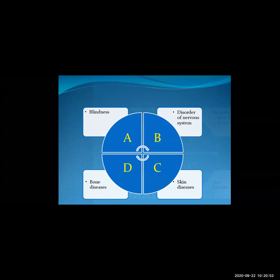Now we see a pie chart showing the result of lack of vitamins. There is a pie chart with sections A, B, C, and D representing the four vitamins. Because of lack of Vitamin A, we have a problem like blindness.